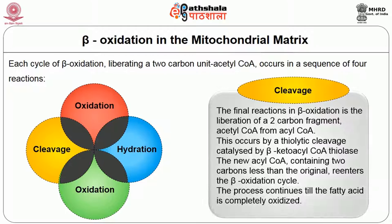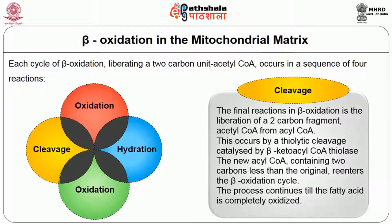The final step is cleavage. The final reaction in beta oxidation is the liberation of a two-carbon fragment, acetyl-CoA, from acyl-CoA. This occurs by thiolytic cleavage catalyzed by beta-ketoacyl-CoA thiolase. The new acyl-CoA, containing two fewer carbons than the original, re-enters the beta oxidation cycle. The process continues until the fatty acid is completely oxidized.